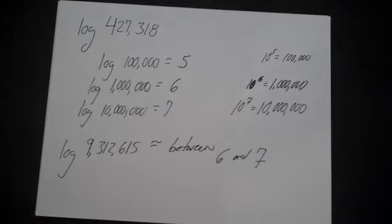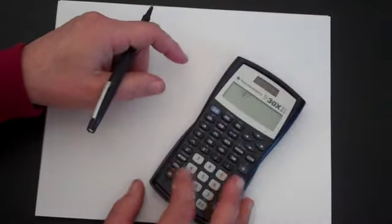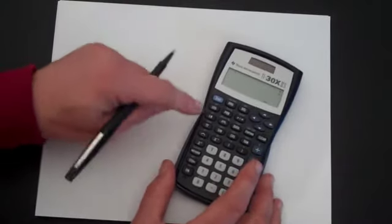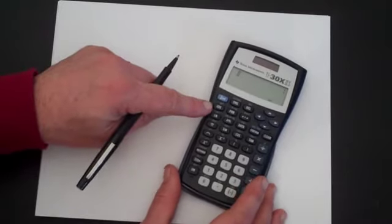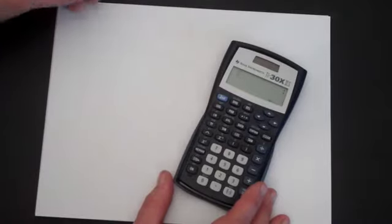The other thing you can do with common logs is it's easy to do on your calculator. Now, every calculator is going to be somewhat different, but any scientific calculator is going to have a log button. Usually they have two buttons, an LOG button and an LN button, and we're going to look at the LOG button.